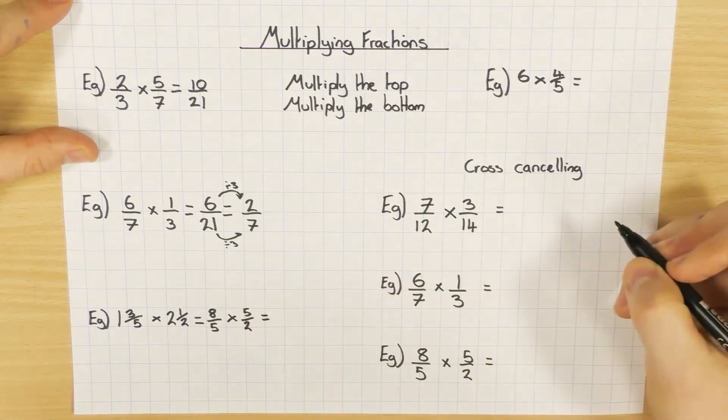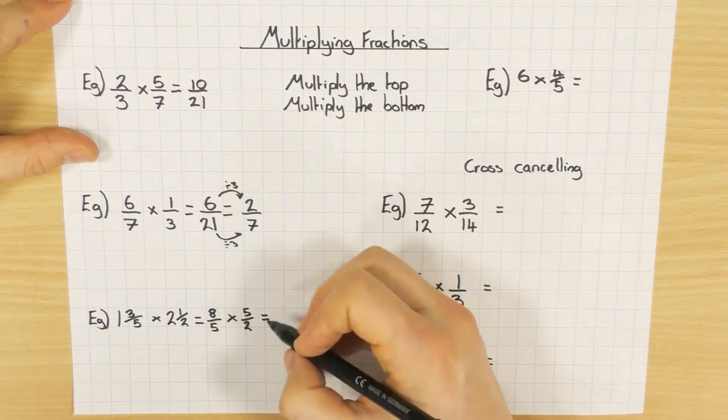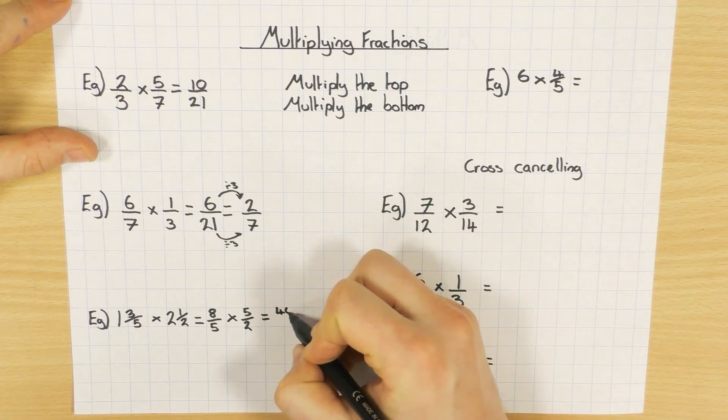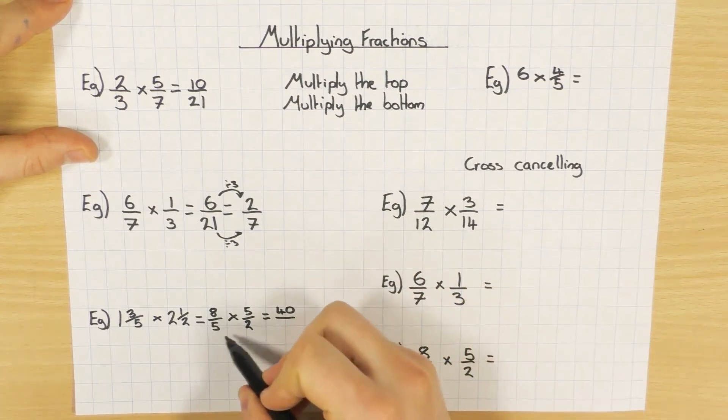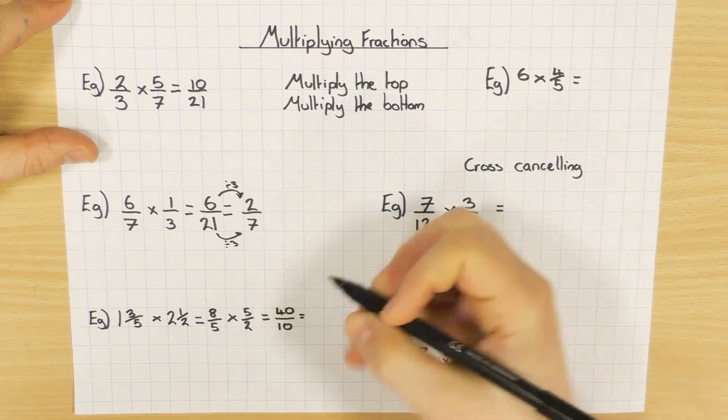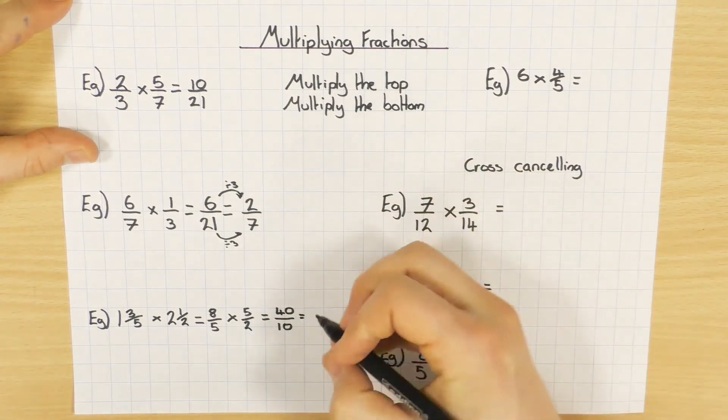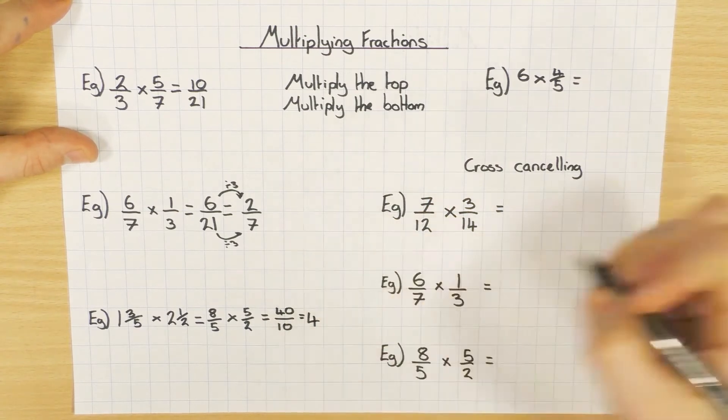Once you've converted them, just do exactly the same thing we did in our first two examples here. 8 times 5 is 40, and then 5 times 2 is 10. And again you can simplify. This one here is actually a really nice one. 40 divided by 10 is 4.